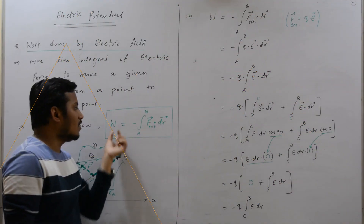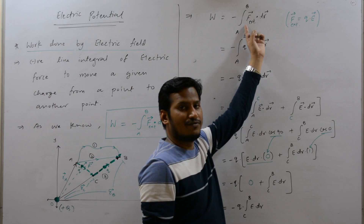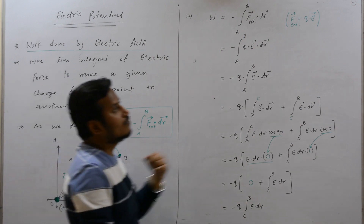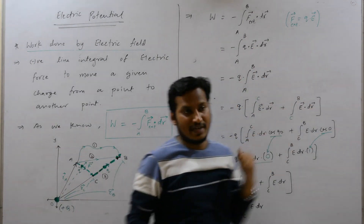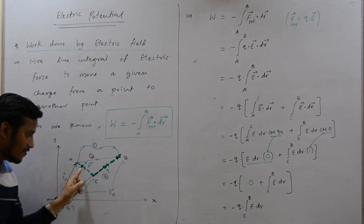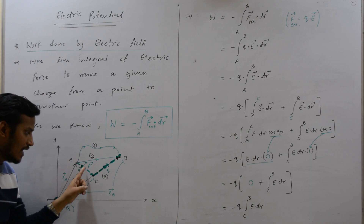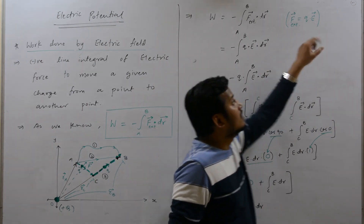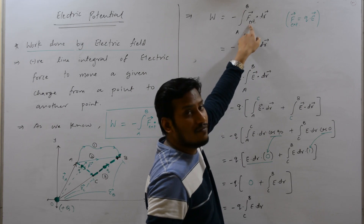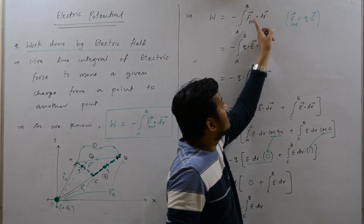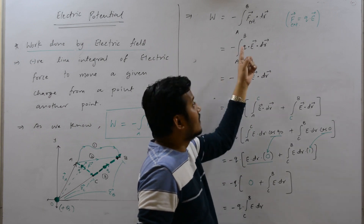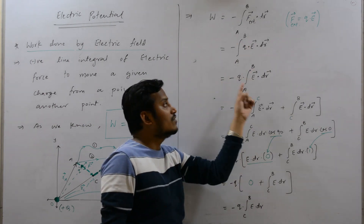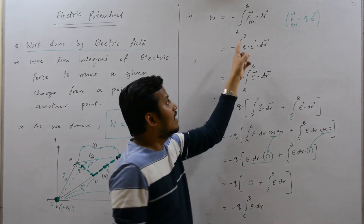Let us simplify the equation: W equals negative integration from A to B of F external dot dr. As discussed, F external equals the value of the charge Q into the electric field E. We can substitute this value. So F external is replaced by Q into E. Since Q is a scalar quantity, we can take it outside the integration. So Q is outside and the remaining term is the integral of E dot dr.